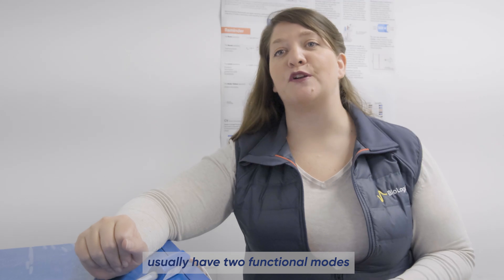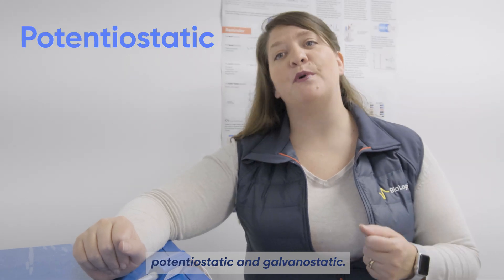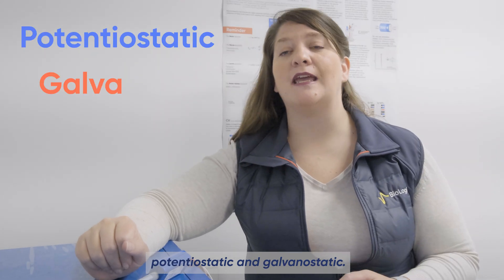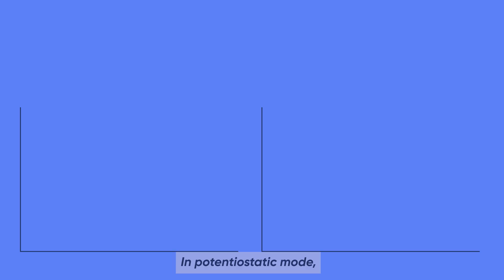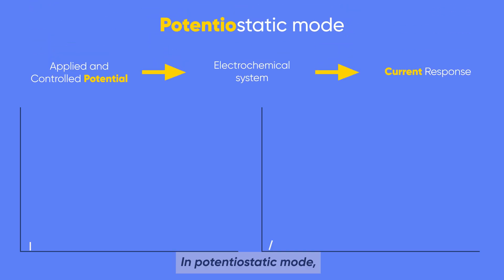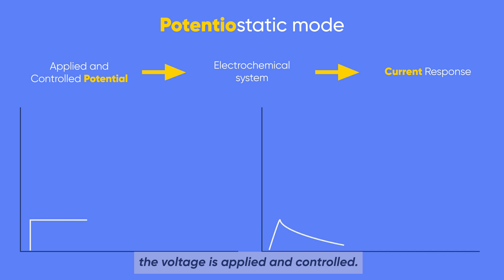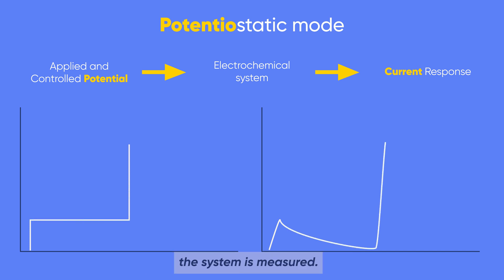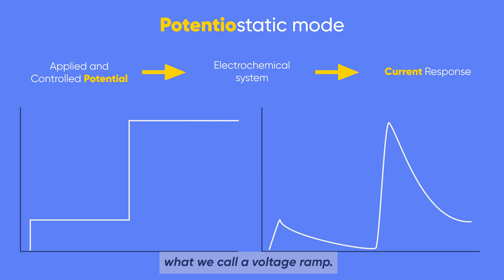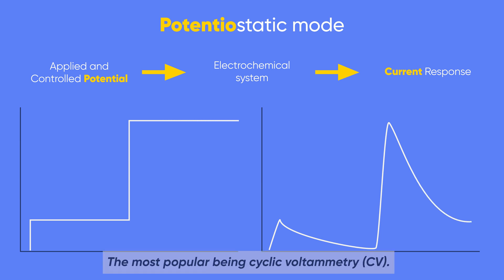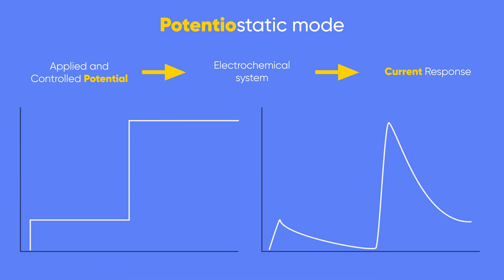These instruments usually have two functional modes: potentiostatic and galvanostatic. In potentiostatic mode, the voltage is applied and controlled, and then the current flowing through the system is measured. It is common to apply what we call a voltage ramp, the most popular being cyclic voltammetry.